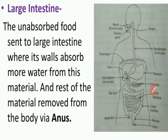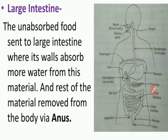After the small intestine, unabsorbed food is sent to the large intestine, where the walls absorb more water from this material. The rest of the material is removed from the body through the anus.